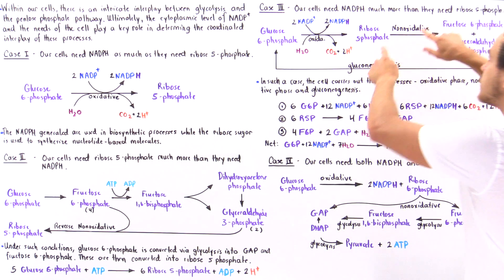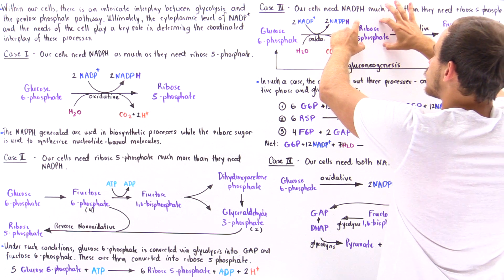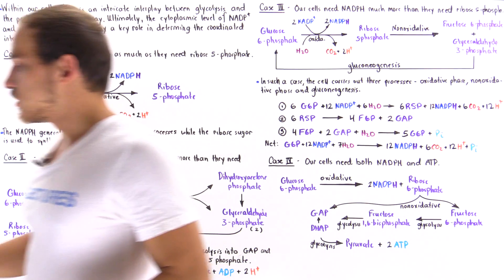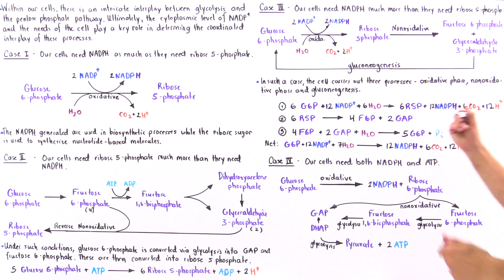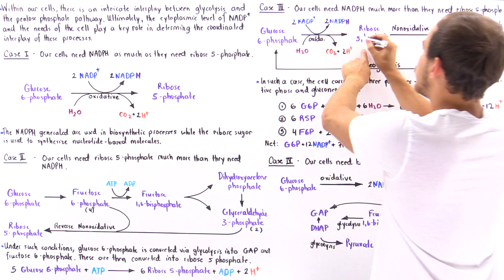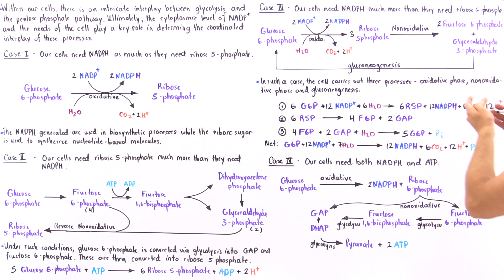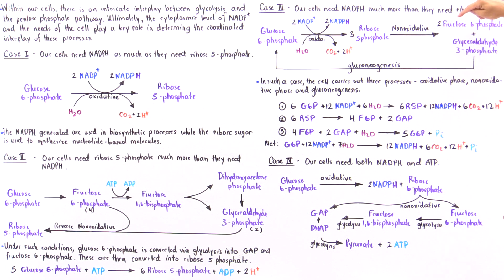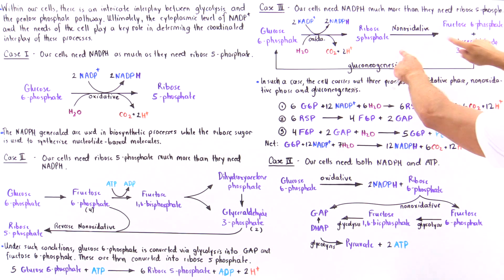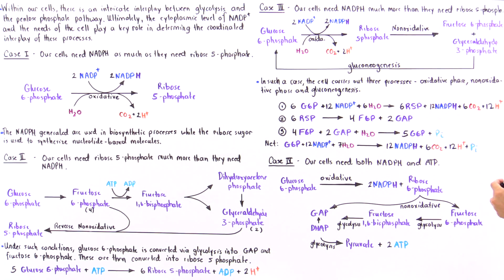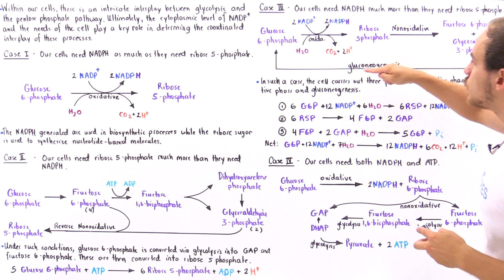In step two, the ribose-5-phosphate undergoes the non-oxidative phase of the pentose phosphate pathway and is broken down into fructose-6-phosphate and glyceraldehyde-3-phosphate. The correct stoichiometric coefficients are: three ribose-5-phosphates produce two fructose-6-phosphates and one glyceraldehyde-3-phosphate. In step three, these fructose-6-phosphate and glyceraldehyde-3-phosphate intermediates follow certain gluconeogenic steps.